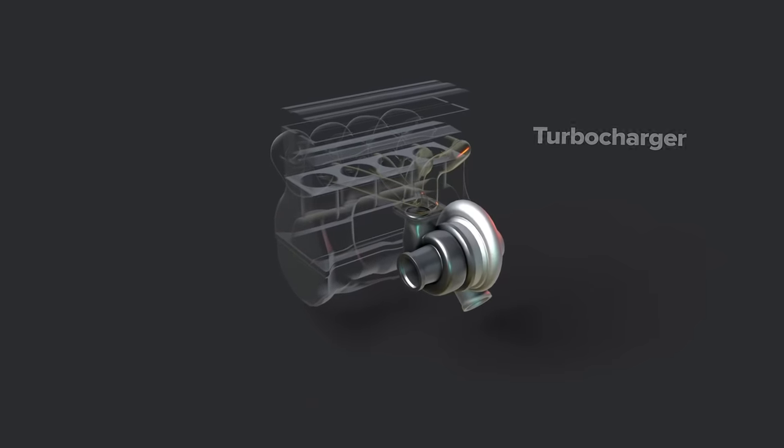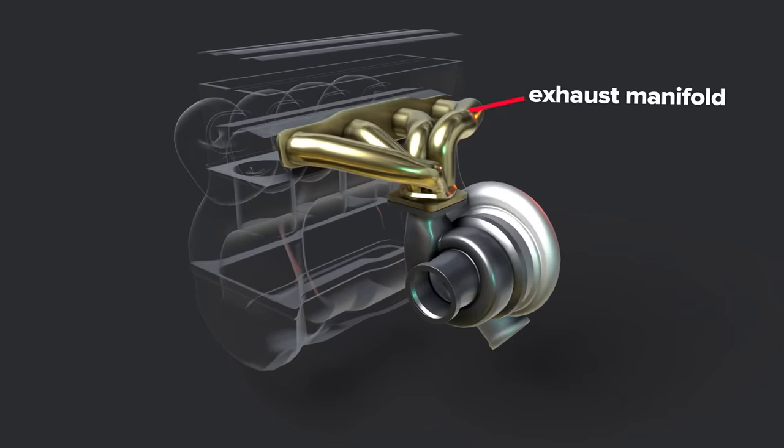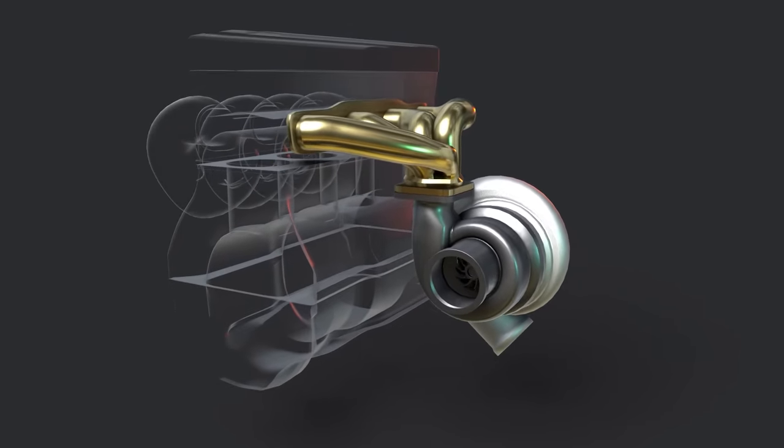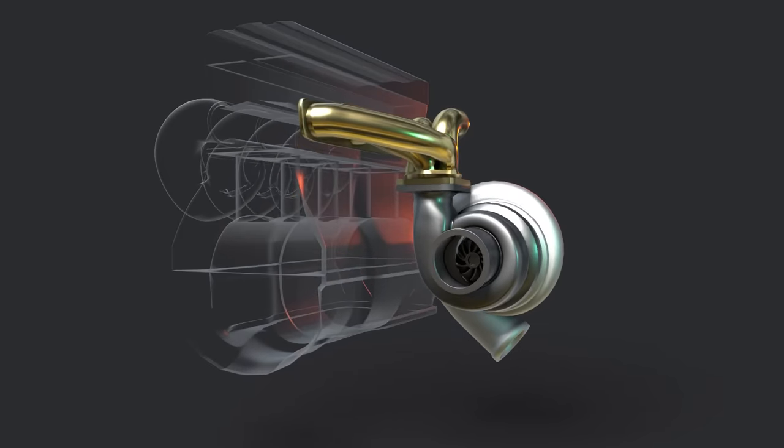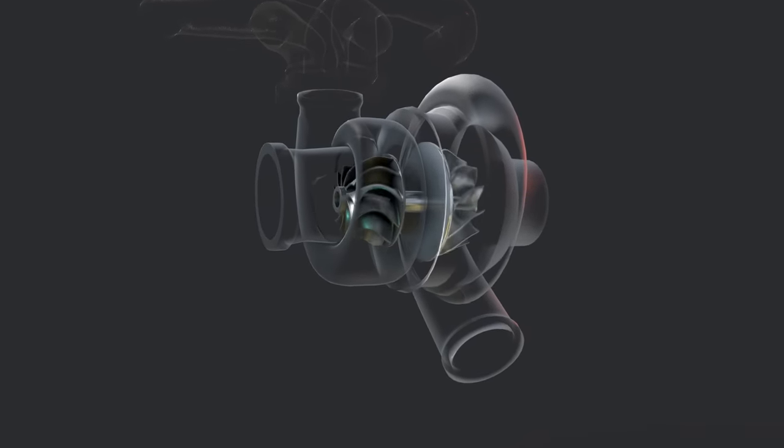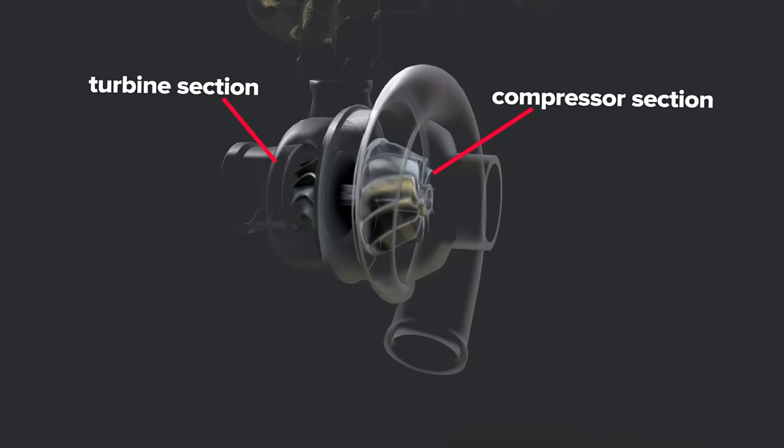Now let's look at how turbochargers work. The turbo connects to the engine exhaust system. In turbo setups, the exhaust manifold may be specially designed for turbo placement and to handle increased heat and pressure. The turbo has two separate compartments called the turbine section and the compressor section.